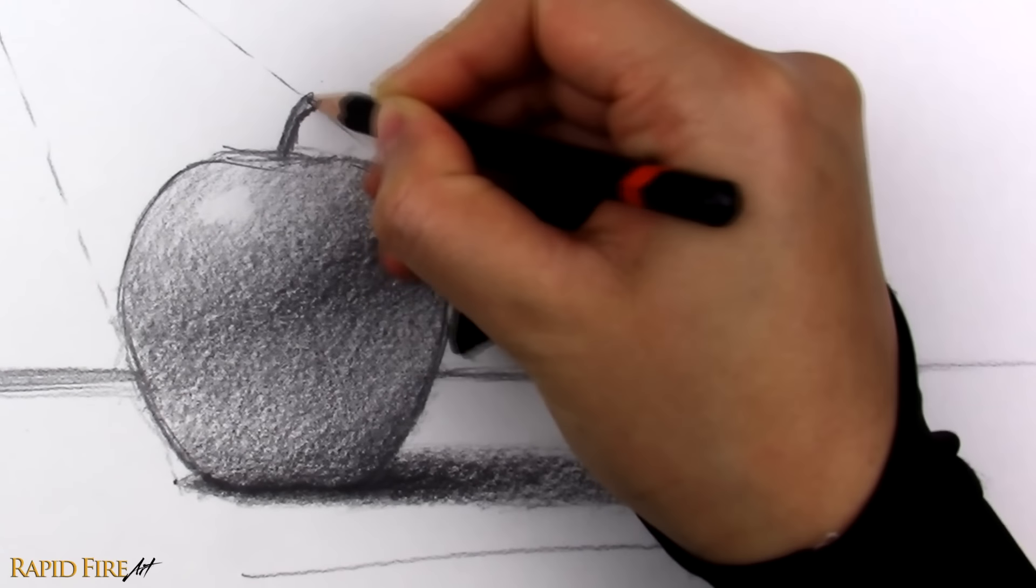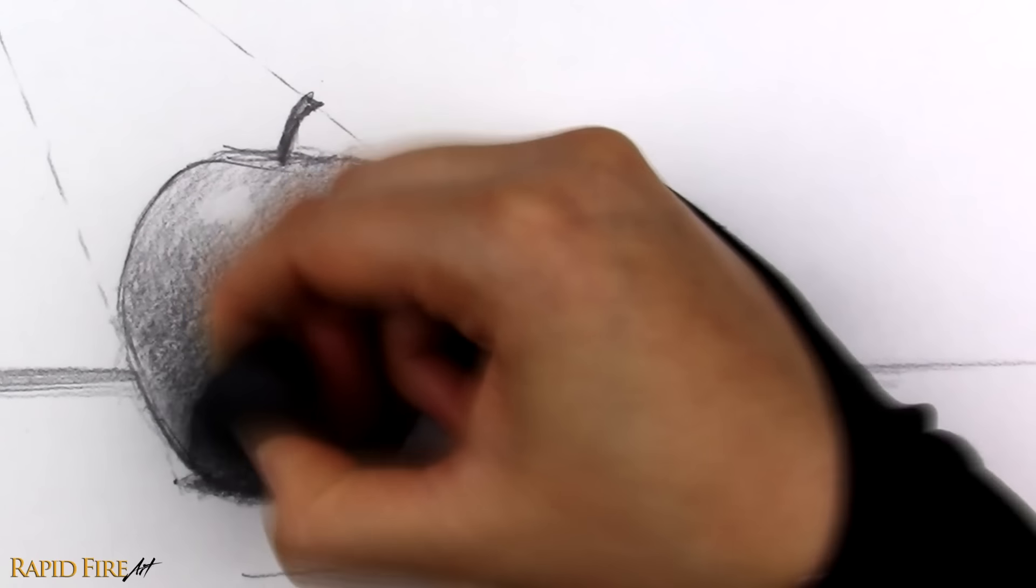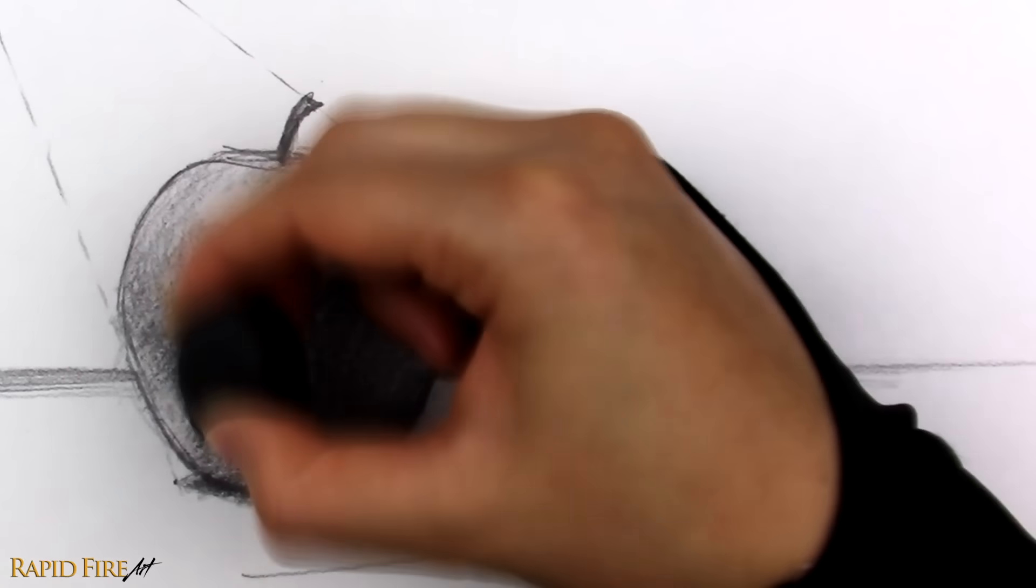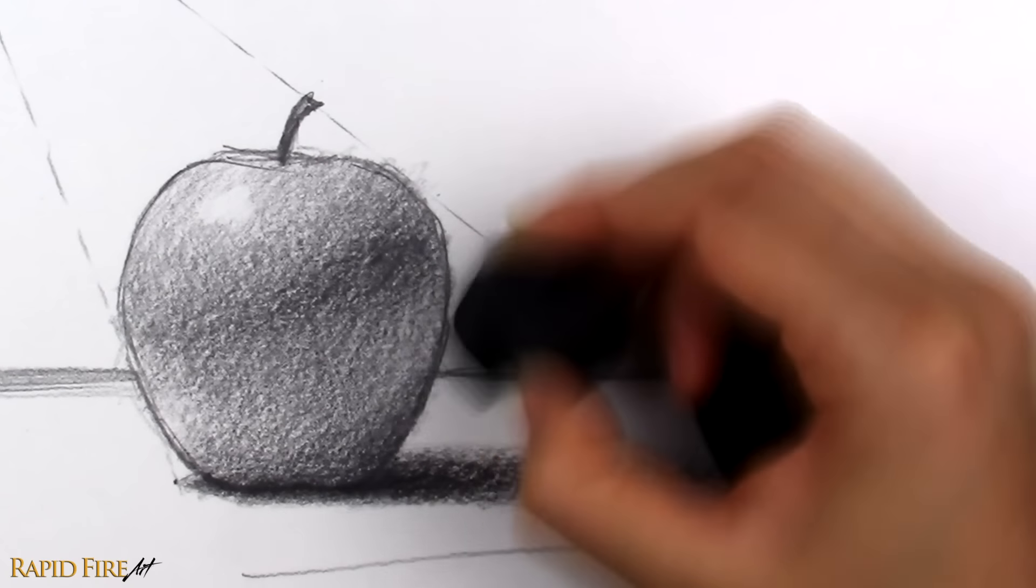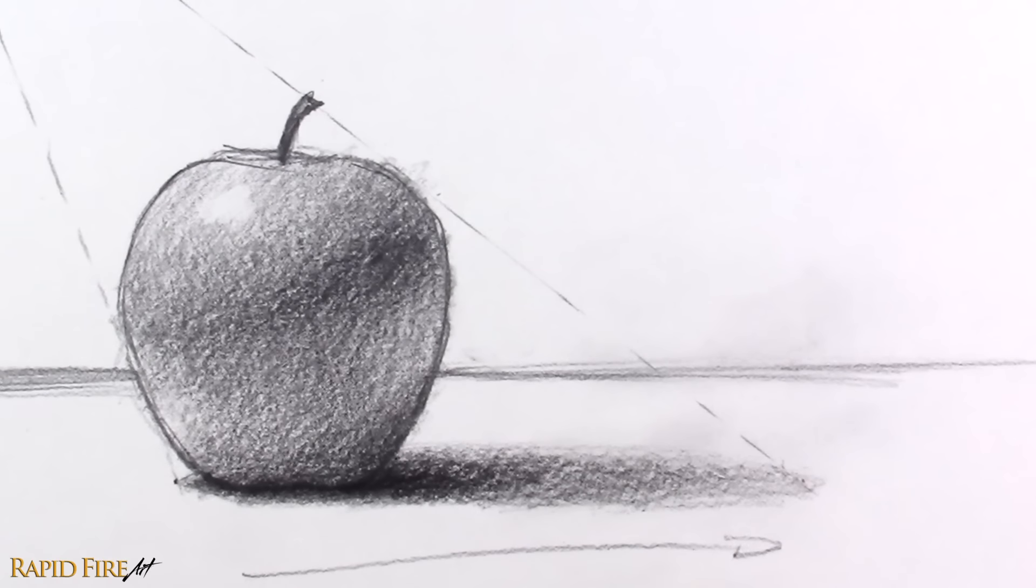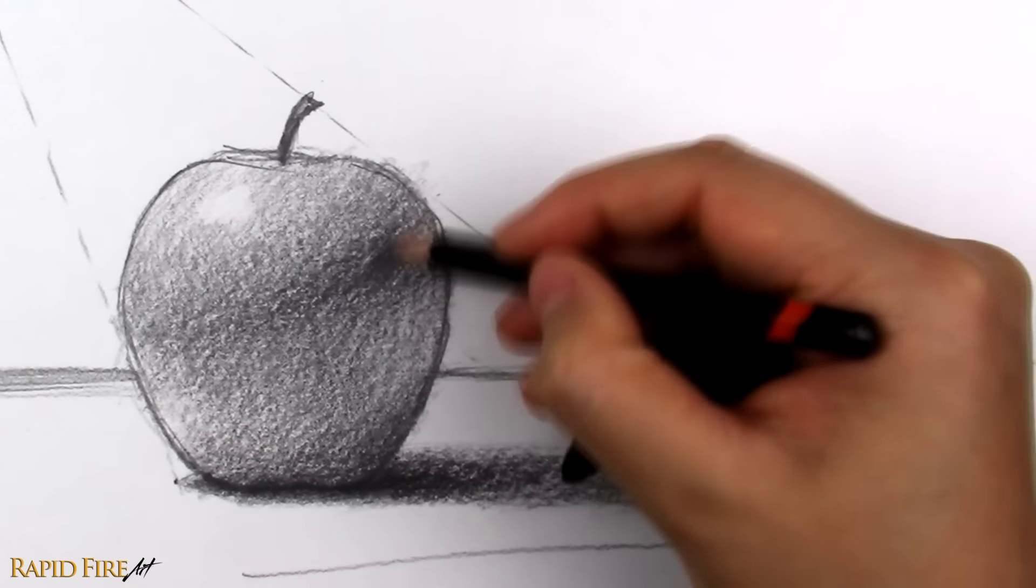If you want your drawing to pop out of the page, exaggerate some of those values to create depth. If your drawing consists of mostly a small range of light grays, try to get a bright highlight in there and some darker values.